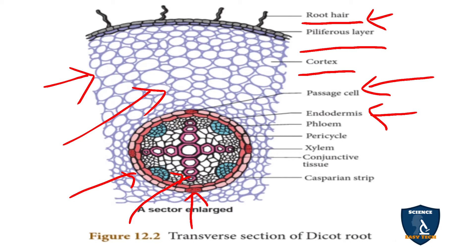Now we move to the pericycle. The pericycle is also a single layer of parenchyma cells. The stele starts from here, and the stele is made up of pericycle, vascular tissues, and pith. Lateral roots — that is, secondary and tertiary roots branching from the tap root — are formed from the pericycle.